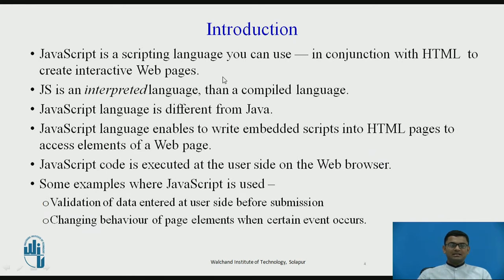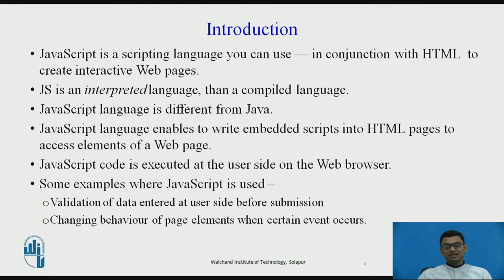JavaScript is a scripting language that we usually use along with HTML to create interactive web pages. One of the most common examples where JavaScript is used is the validation of data entered at the user side before submission. Also we use it for changing the behavior of page elements — if there is an image, if there is an icon, if there are some elements on your web page and you want to change the behavior, you usually want to use JavaScript.